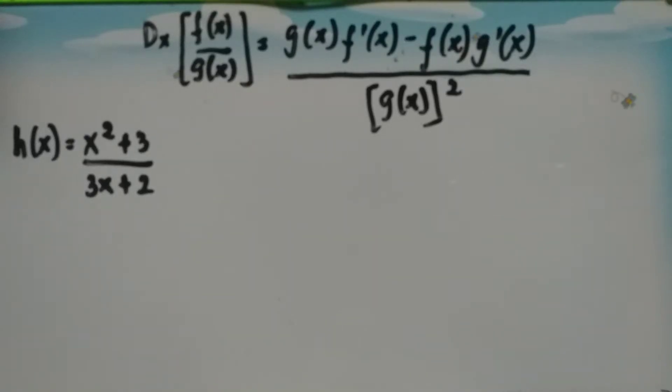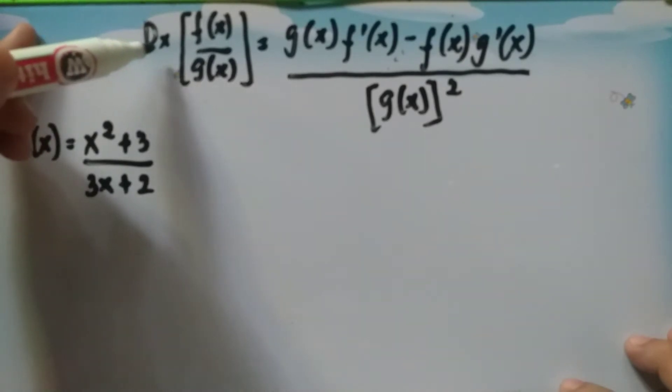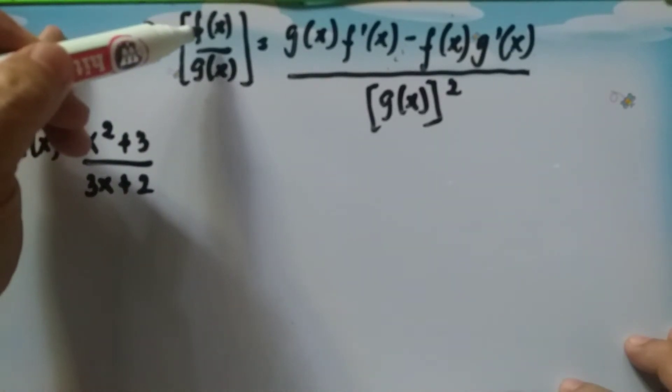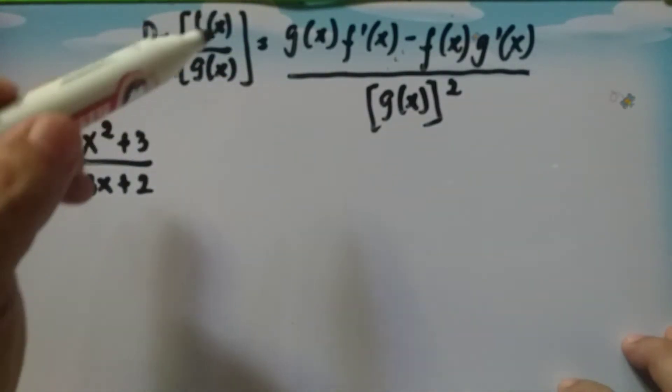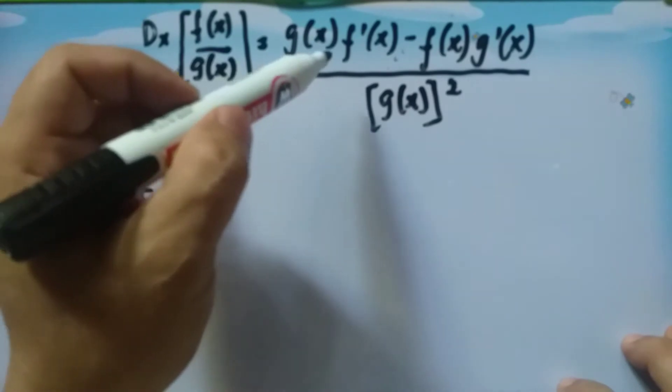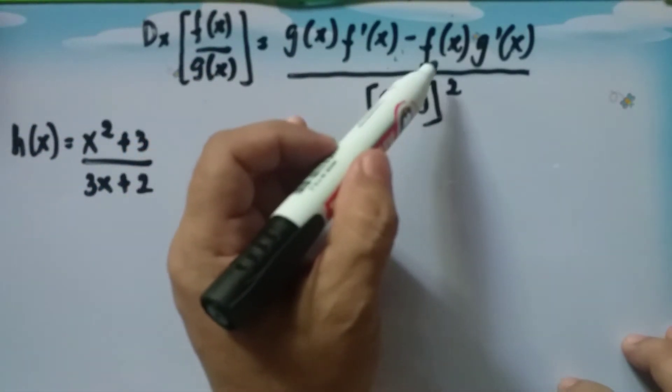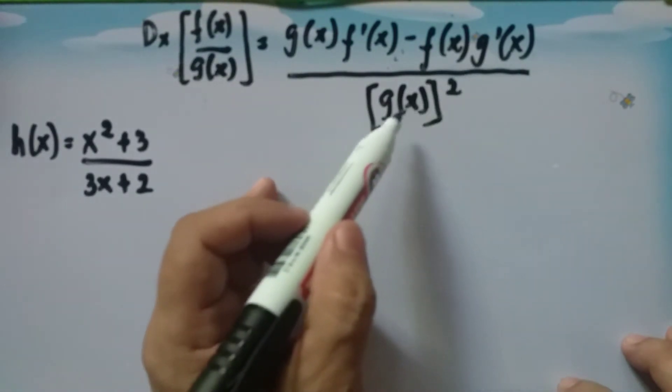The quotient rule states that the derivative of f divided by g of x equals g of x times f prime of x minus f of x times g prime of x, all over the square of g of x.